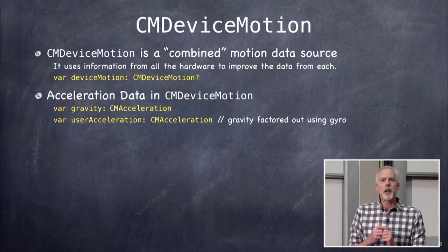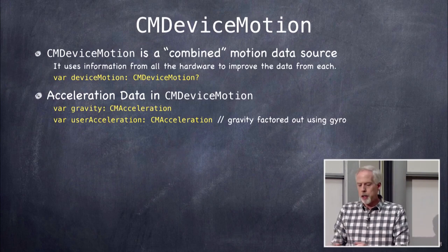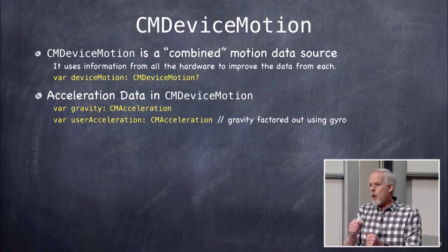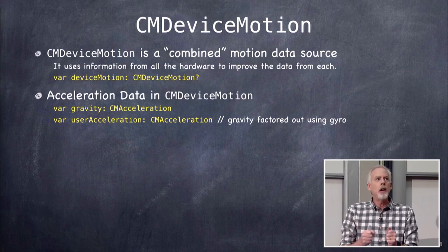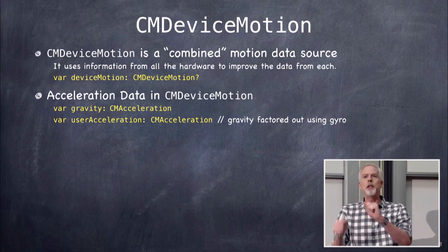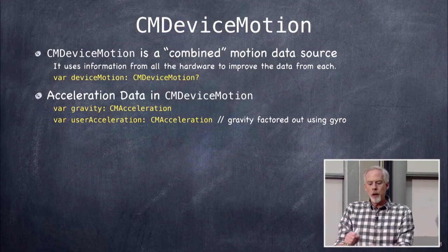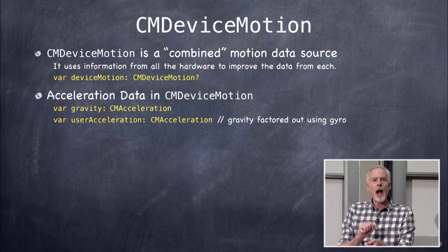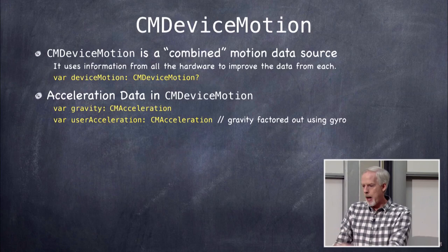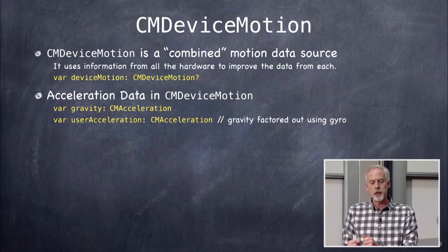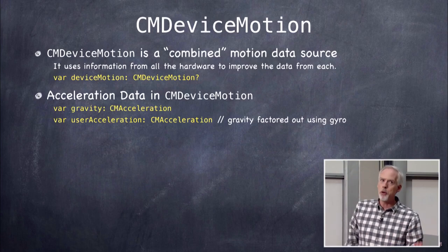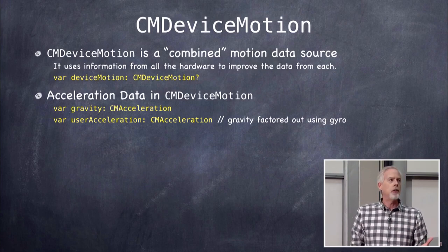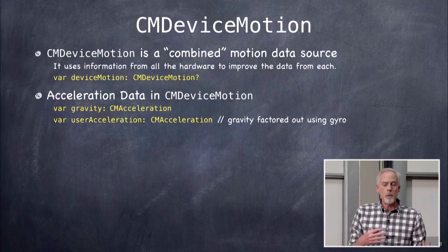Instead we access a pseudo-device called device motion, which has a var called deviceMotion. The device motion struct combines the sensors to give better information. For example, with acceleration: combining the gyro and accelerometer lets you factor out gravity from user-caused acceleration. So in CMDeviceMotion you have a gravity property (a CMAcceleration) and also userAcceleration — they're separated out.